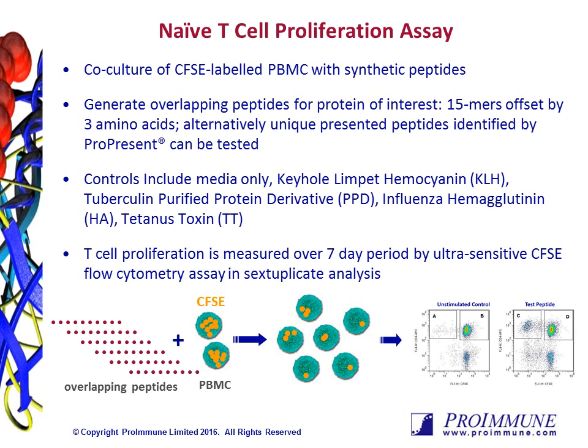In these representative dot plots, box C represents the proliferating CD4-positive CFSE-low T-cells in response to the test peptide, which is compared with box A in the unstimulated control.